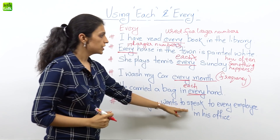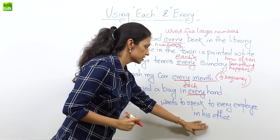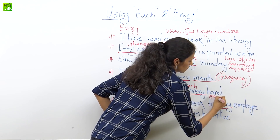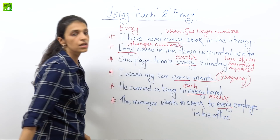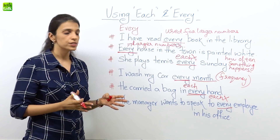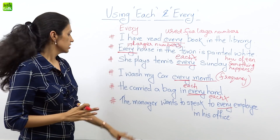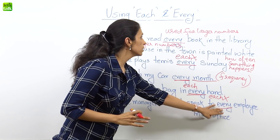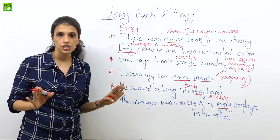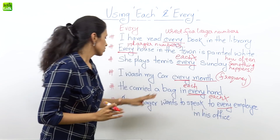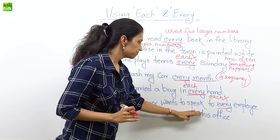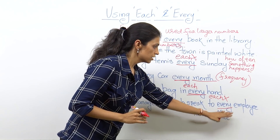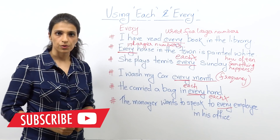'The manager wants to speak to every employee in his office.' Why have I used 'every' and not 'each'? Because there are more than two employees in the organization. So the better thing to say is 'every.' Remember, we deal with larger numbers — three or more. So: 'the manager wants to speak to every employee in his office' — 'every' because there are more than two employees.